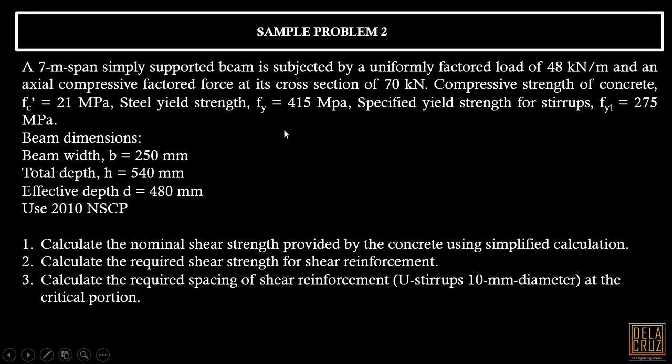Given the dimensions of the beam, using NSCP 2010, the problem asks to: calculate the nominal shear strength provided by the concrete using simplified calculation; calculate the required shear strength for shear reinforcement; and calculate the required spacing of shear reinforcement using stirrups 10 mm diameter at the critical portion.